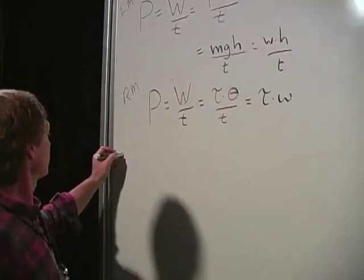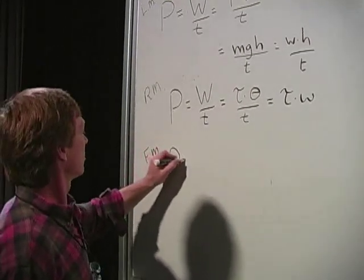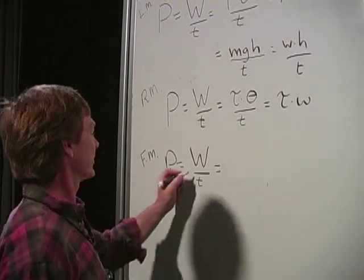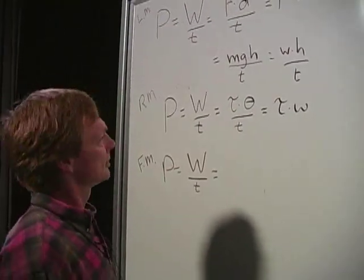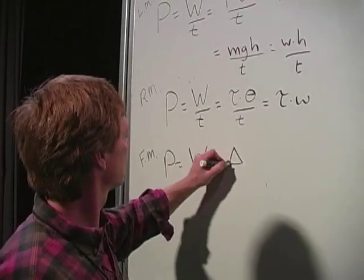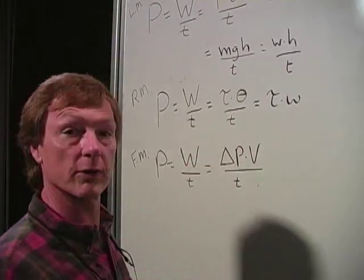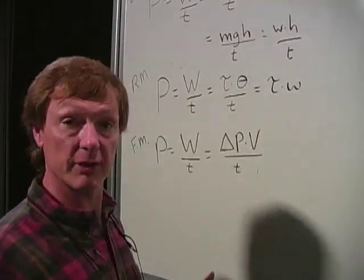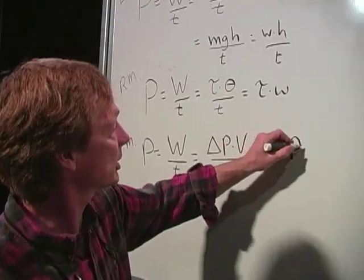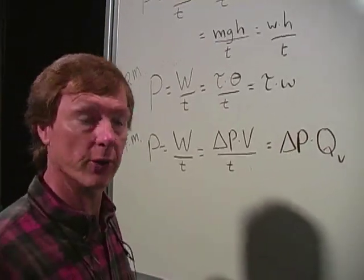If we do fluid mechanical - I'll call that FM for fluid mechanical - power is work over time. And that is, fluid work is pressure difference times volume over time. And volume over time, that's volume flow rate. So that's pressure difference, delta P, times volume flow rate, depending on what your inputs are.